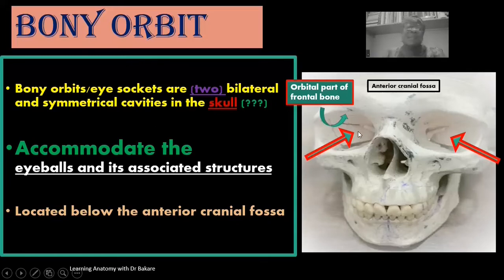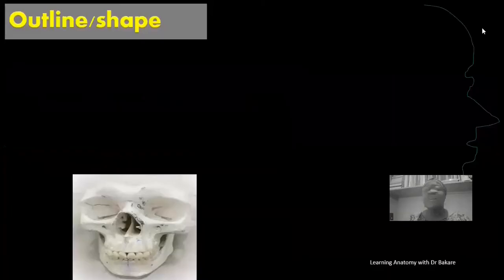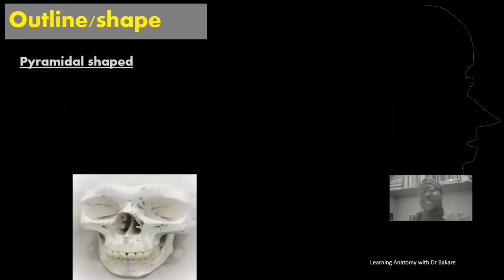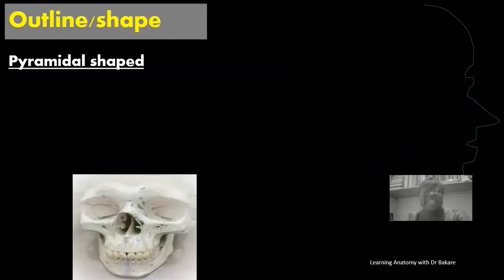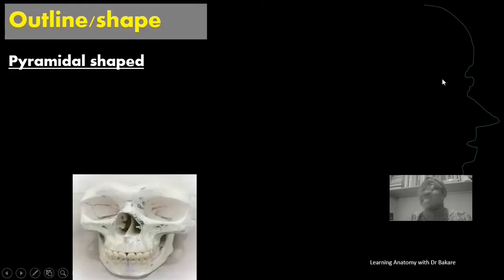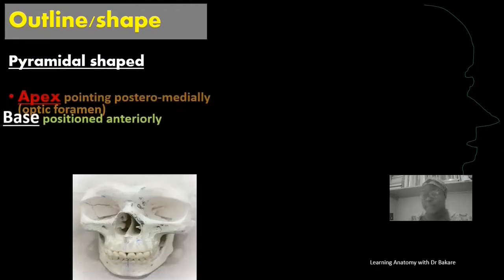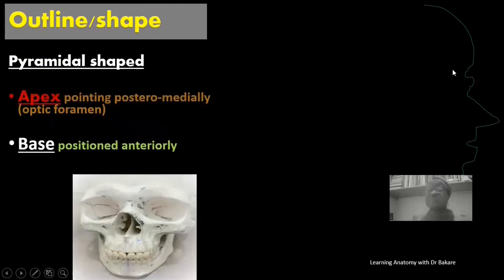It's good for us to establish the relationship between the anterior cranial fossa and the configuration of the orbit. Talking about the outline and shape of the orbit — the orbit takes a pyramidal configuration, so it is pyramidal in shape. This is the region where we have the eye socket, and because it is pyramidal in shape, it presents an apex and also a base.